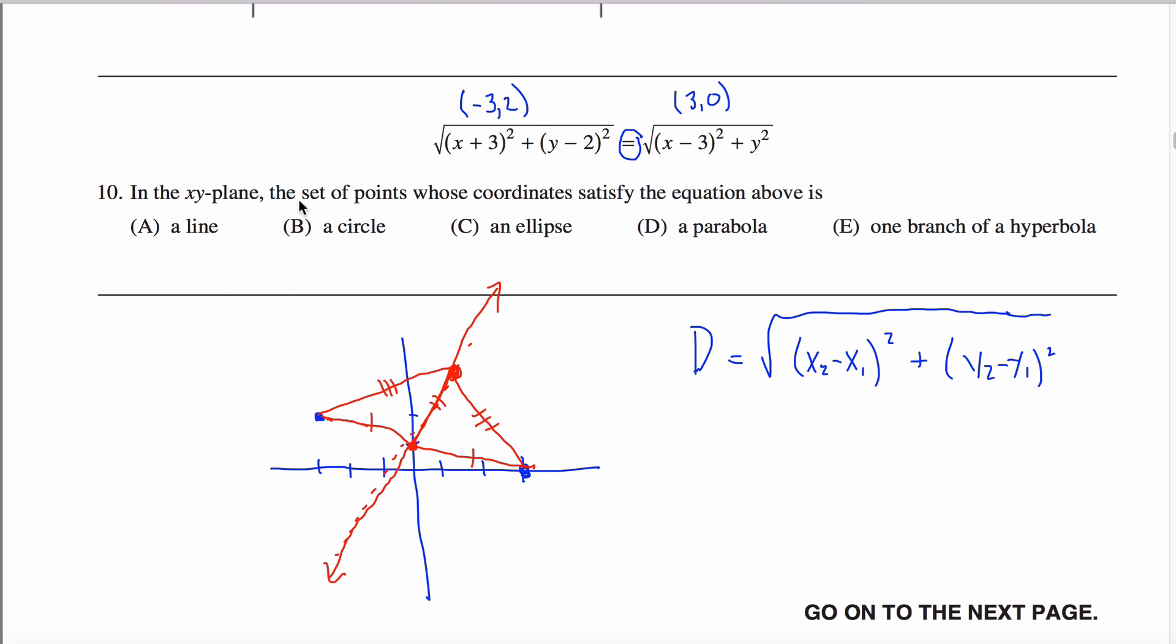So in the X, Y plane, the set of all points whose coordinates satisfy this equation is what? It's just a line. Surprised me, but it is just a line.